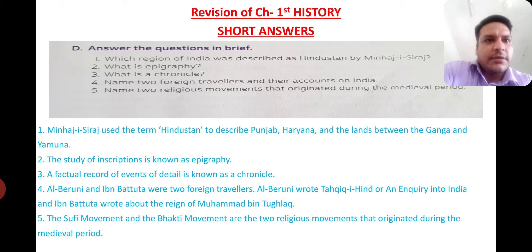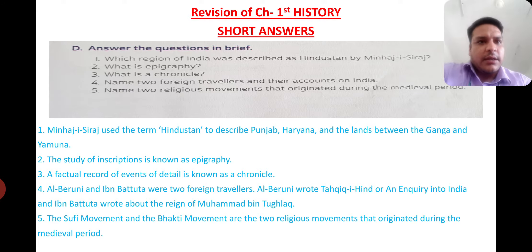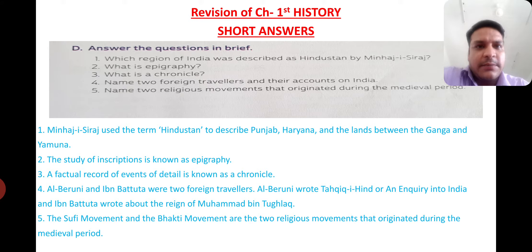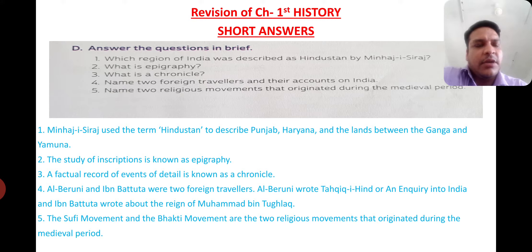First question: Which region of India was described as Hindustan by Minhaj-i-Siraj? Minhaj-i-Siraj used the term Hindustan to describe Punjab, Haryana, and the lands between the Ganga and Yamuna rivers.